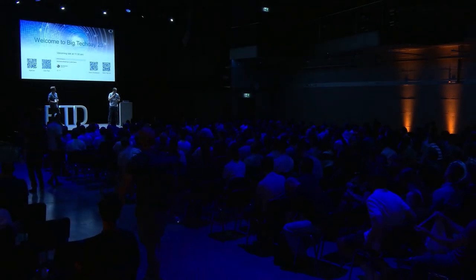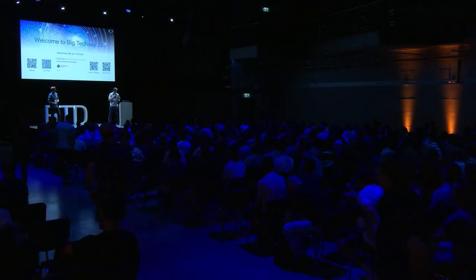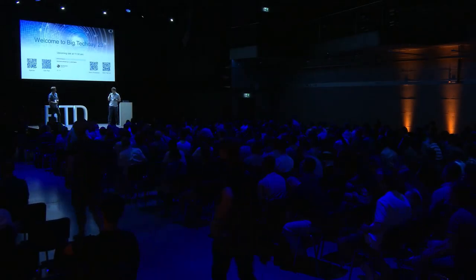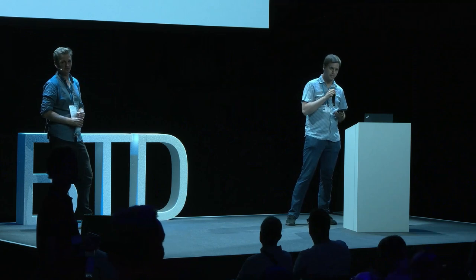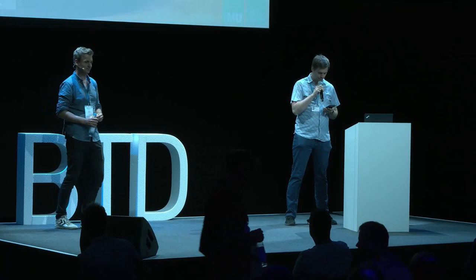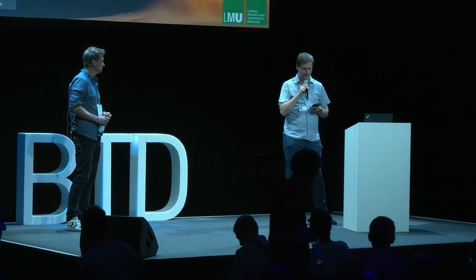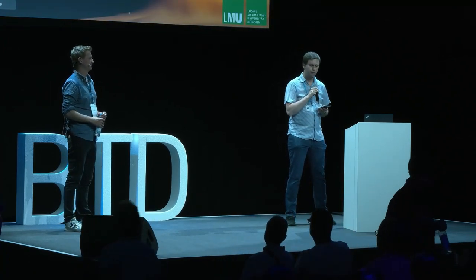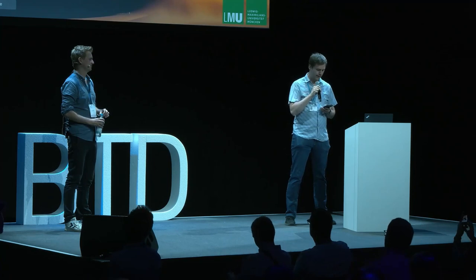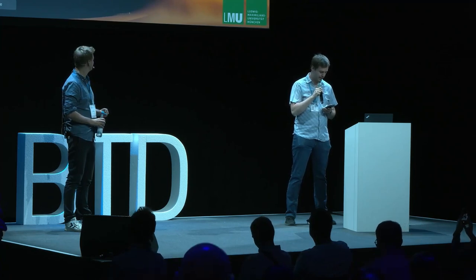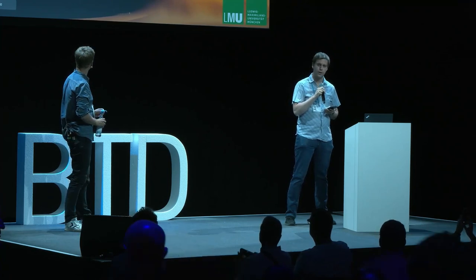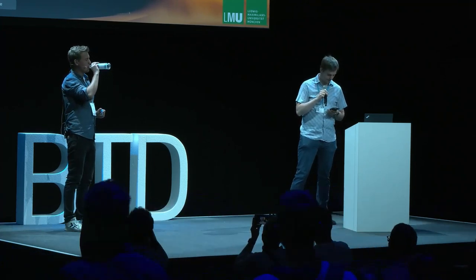Welcome everyone. It is my pleasure to introduce our next speaker, Robin Rombach. He is a researcher with Stability AI and one of the people behind Stable Diffusion, a tool that many of you have probably used already to generate impressive images from simple text prompts. Besides developing widely used tools, Robin is also an advocate for open source machine learning models.